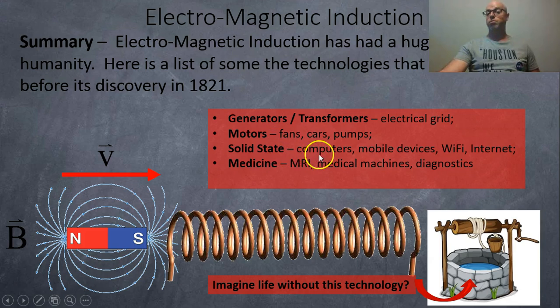Solid state physics allows us to have, which is electromagnetism, allows us to have computers, mobile devices, WiFi and the internet. And of course, we can use the same technology for MRI, medical machines, diagnostics. So it's really, really changed the world.